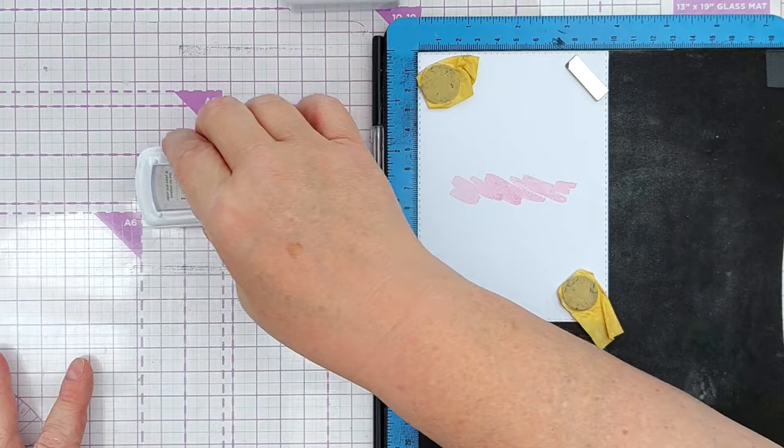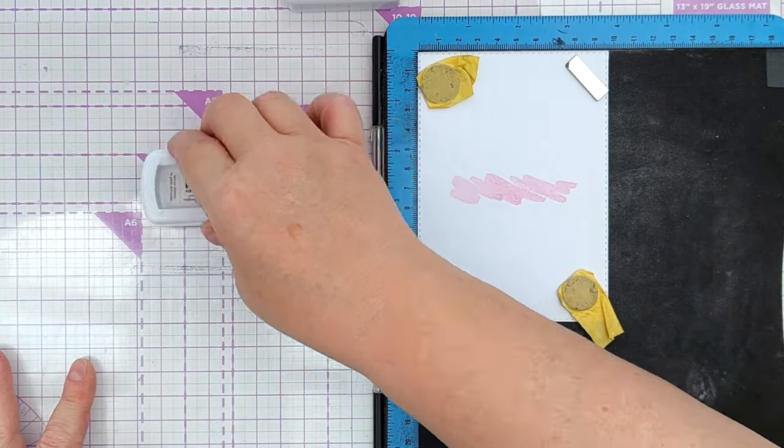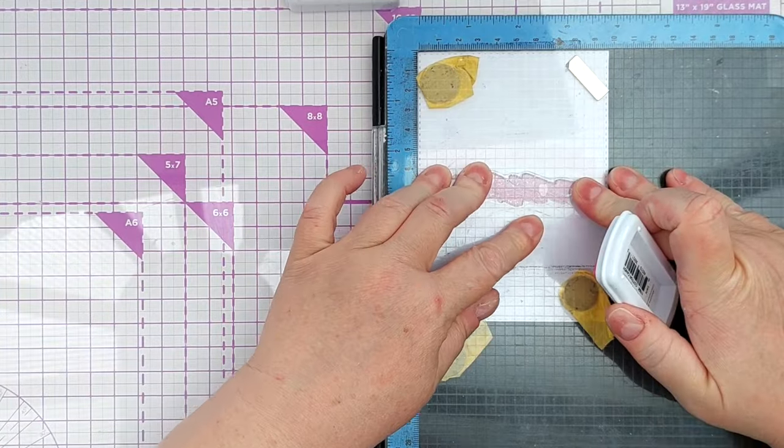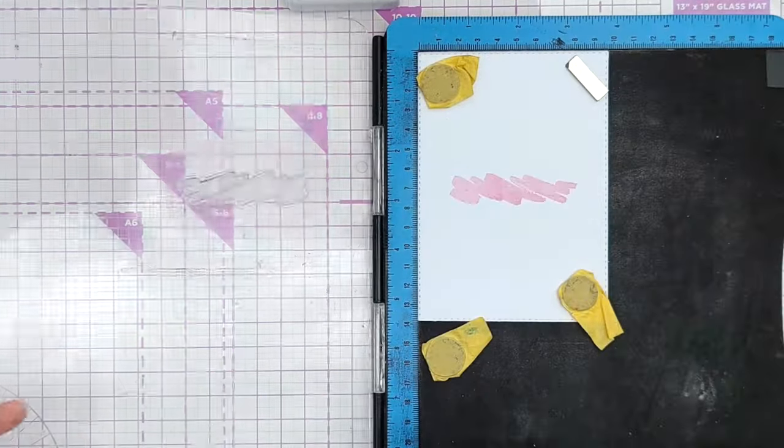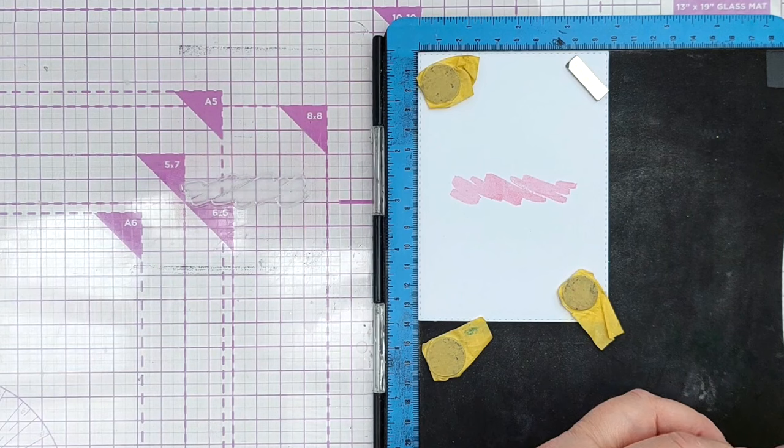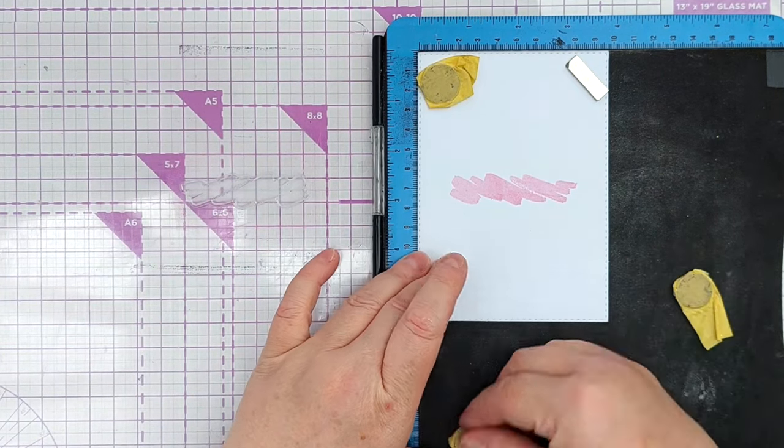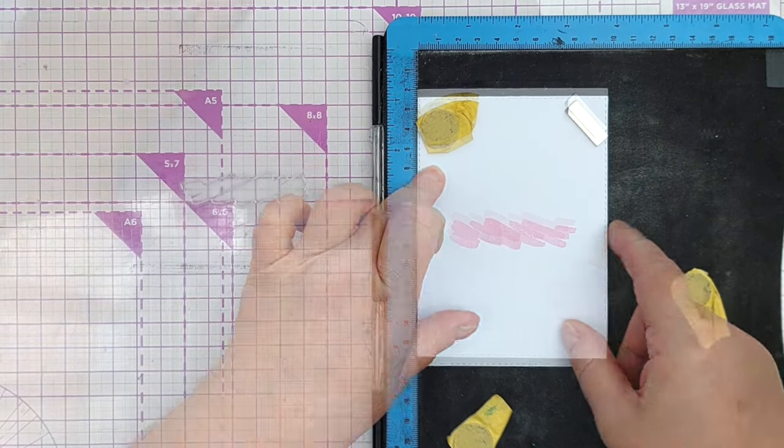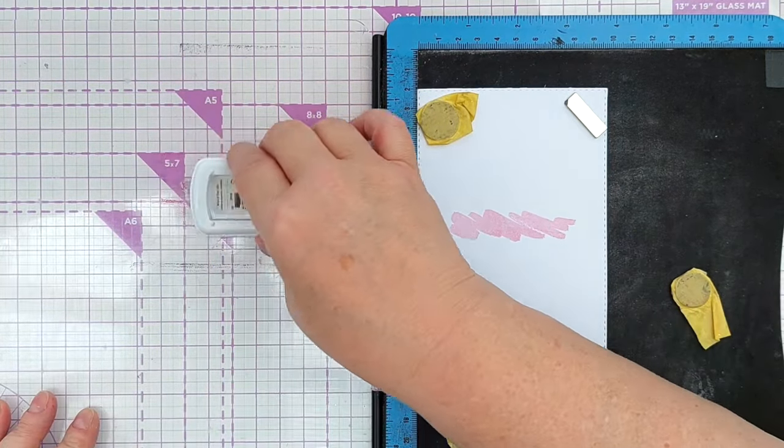I'm stamping it three times because this is a silicone stamp and water-based inks like this tend to bead up on it so stamping it multiple times with a stamp positioner helps to get a good impression. Once I've done those three stamps I moved my panel down in the positioner two centimeters.